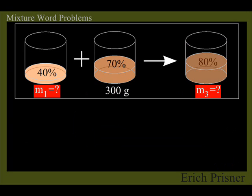Let me just give one other example. How much of a 40% acid solution do you have to add to 300 mg of an 80% acid solution to get a 70% acid solution?